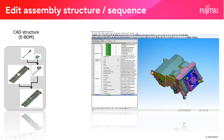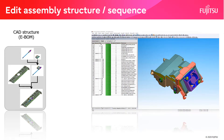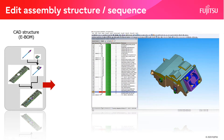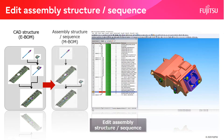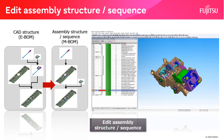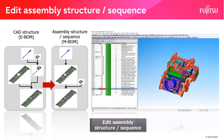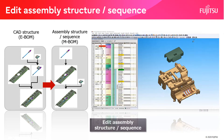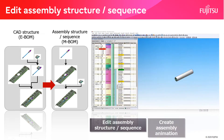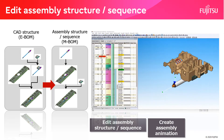Change the CAD data structure to the structure and procedure for assembling the product. Select the parts in the order of disassembly from the assembled 3D model and rearrange them. An animation is generated when the changes to the assembly procedure are complete.